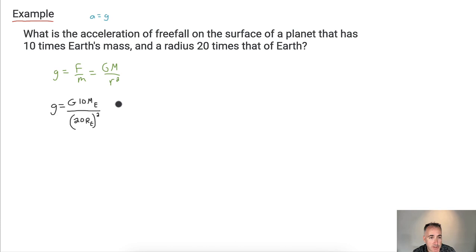Well, then what do I get? That means I end up with, I'll put the 10 in front. So I'll say 10 times G times m_E, all that over, but what's 20 squared? 2 squared is 4, and add 2 zeros, so that'll be 400. So 400r_E squared.